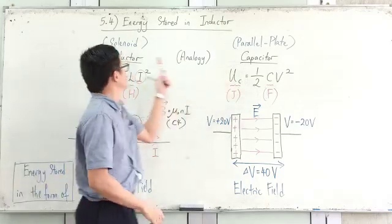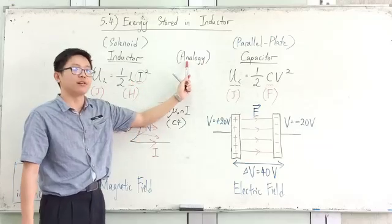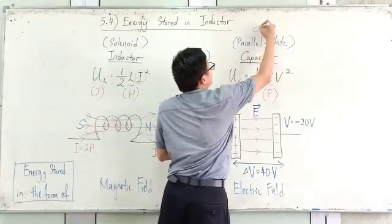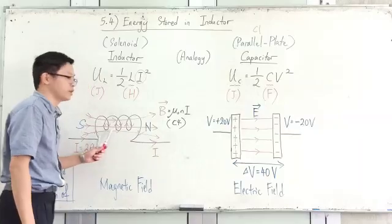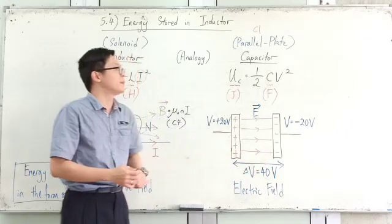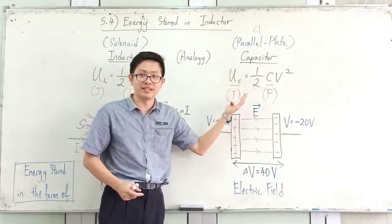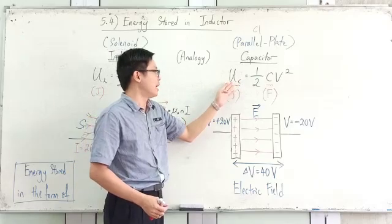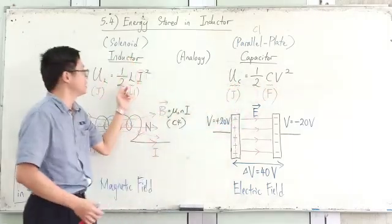Now for the energy stored in a capacitor, it has a similar formula — that's why we call it an analogy. The capacitor is a parallel plate capacitor, which we learned about in chapter one. The parallel plate has a positive plate and a negative plate. The solenoid has a north pole and south pole; the parallel plate has a positive and negative terminal. The capacitor does store energy — electrostatic potential energy — and its formula is ½CV².